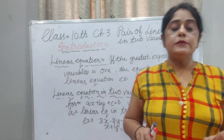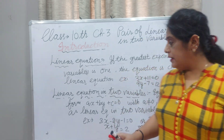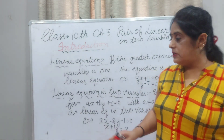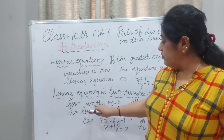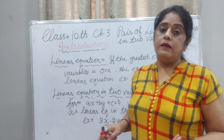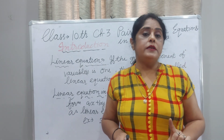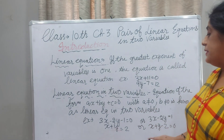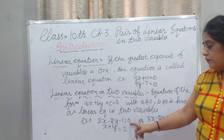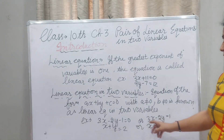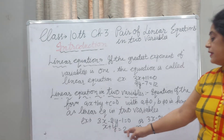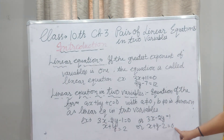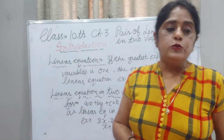An equation in the form AX + BY + C = 0 where two variables X and Y are used, C is a constant term, A should not be 0 and B should not be 0 — that is the condition. If A is 0, then 0 × X = 0, and if B is 0, only the constant term will be left. So for a linear equation in two variables, A and B should not be 0. For example, 3X − 2Y − 1 = 0, or 3X − 2Y = 1, or X + Y = 2. These are examples of linear equations in two variables.